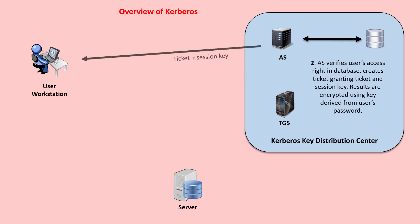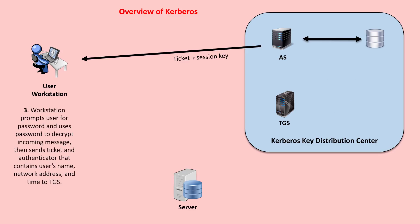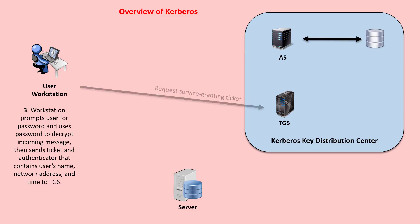Then, the encrypted result is sent back to the user workstation. The workstation prompts the user for a password and uses the password to decrypt the incoming message, then sends the ticket and an authenticator that contains the user's name, network address, and time to the ticket-granting server. The user proves his identity by sending the authenticator encrypted with the session key received in step 2.